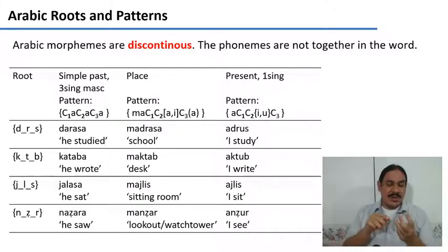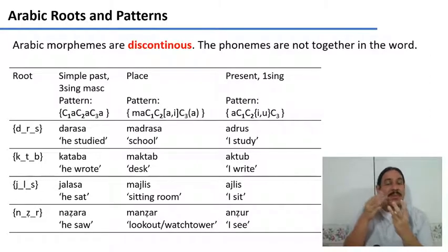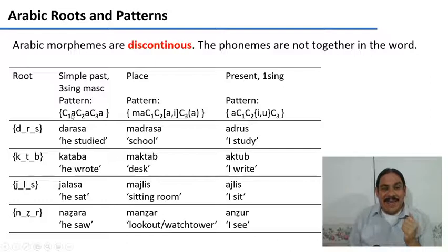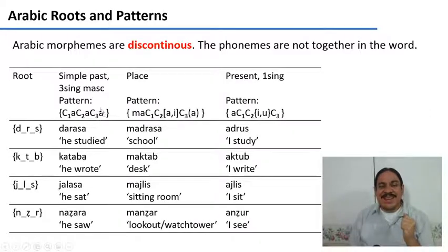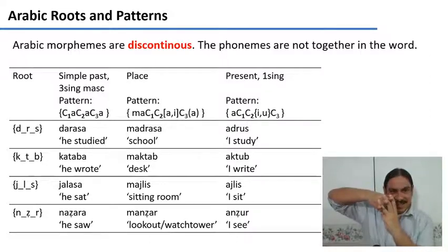Arabic has roots that are made of three consonants. For example, the root D-R-S is related to things about studying. You have a pattern for the simple past, third person masculine, to build a verb meaning 'he studied.' This pattern consists of: a slot for the first consonant, then the vowel A, a slot for the second consonant, then A again, a slot for the third consonant, then another A. So you take the root D-R-S, interleave it with the pattern A-A-A, and you get 'Darasa' — he studied.